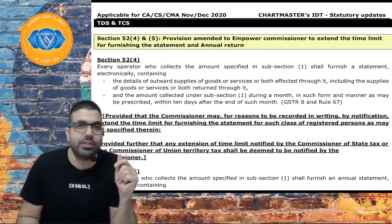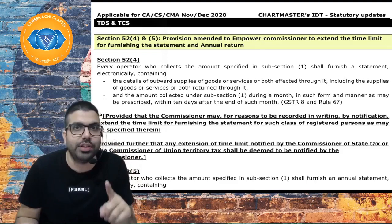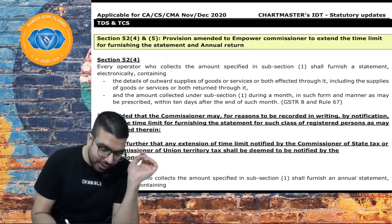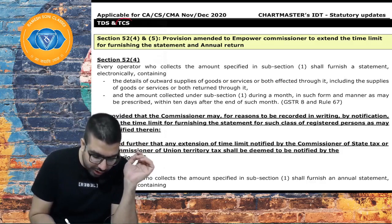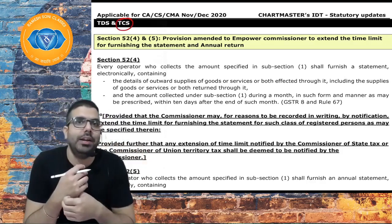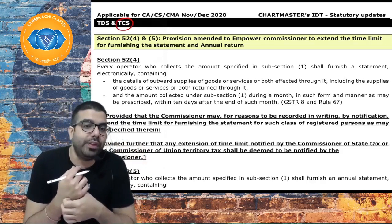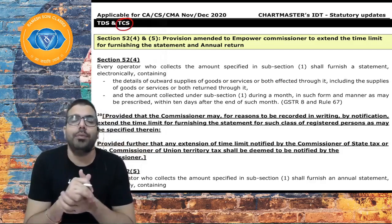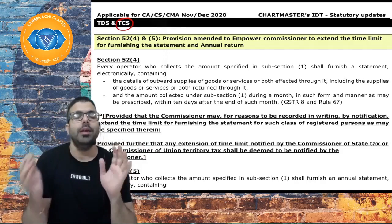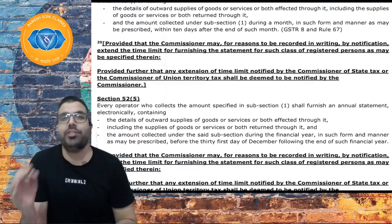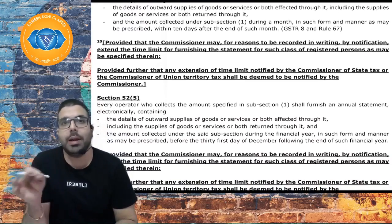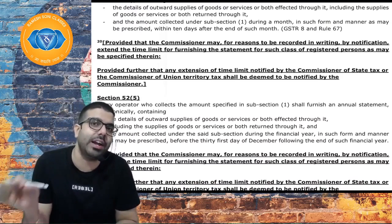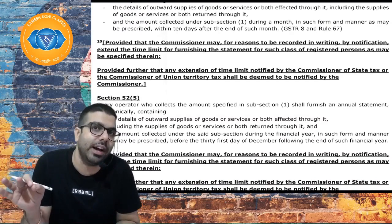The first discussion relates to the chapter of TDS and TCS. In section 52, which relates to TCS, there is a small amendment in section 52 subsection 4 and 5. The Commissioner has been given the power to extend the due date for furnishing of GSTR-8 and GSTR-9B.